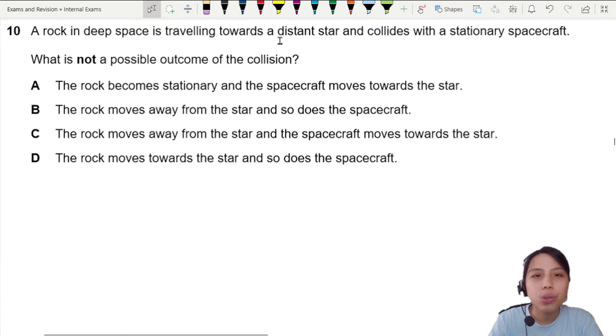A rock in deep space traveling towards a distant star in the process it collides with the spacecraft. What is not a possible outcome of the collision?